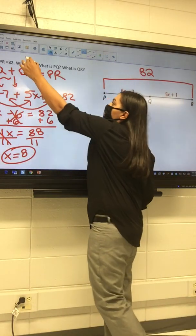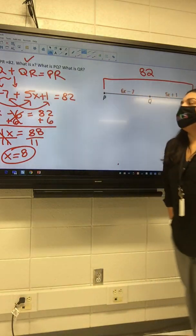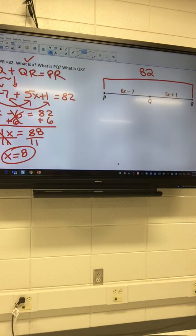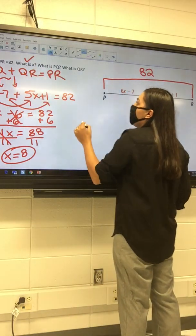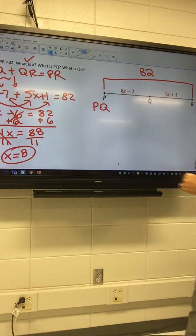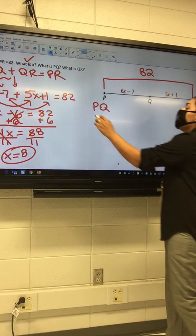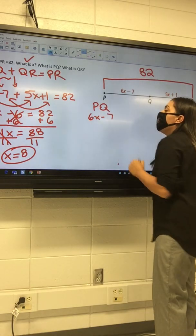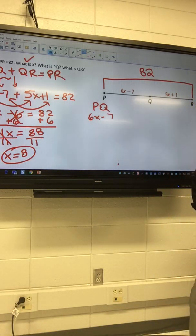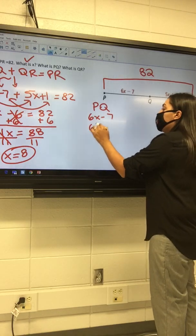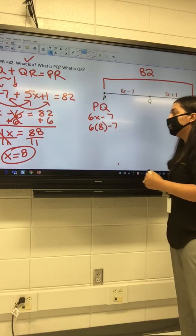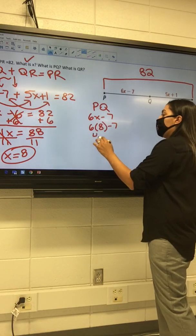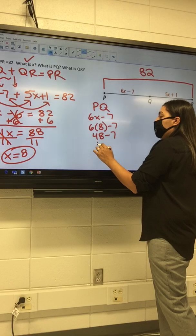Okay, so we solved our first thing. We know what x is. What's the next question that it asks us? Look at the very top at the instructions. So we're trying to find what? PQ. That's the next question. We did the first question, we needed it. So PQ, and what is PQ's equation? 6x minus 7. And Brie, what's our x value equal? 8. So we're gonna plug it in. So 6 times 8 minus 7. This is going to be 48 minus 7, which is 41.